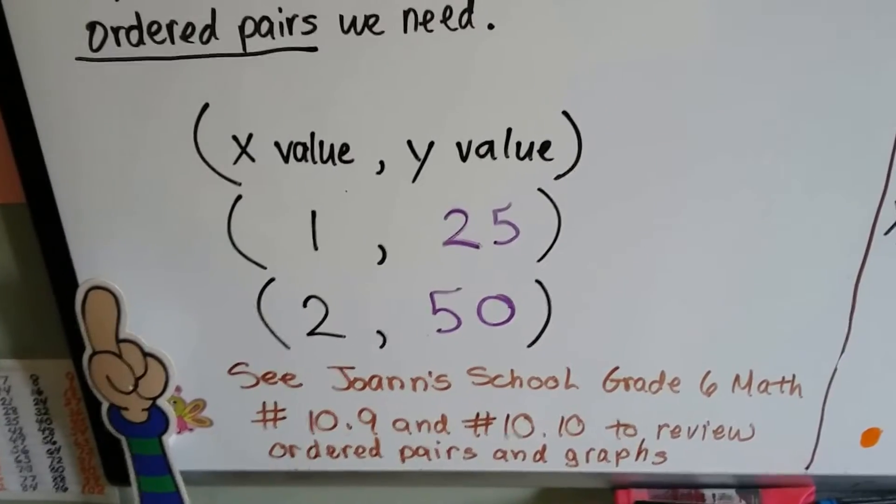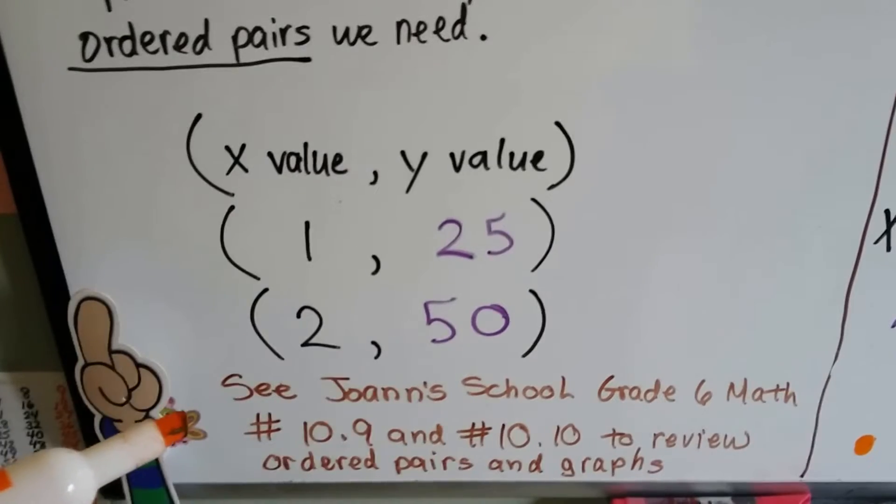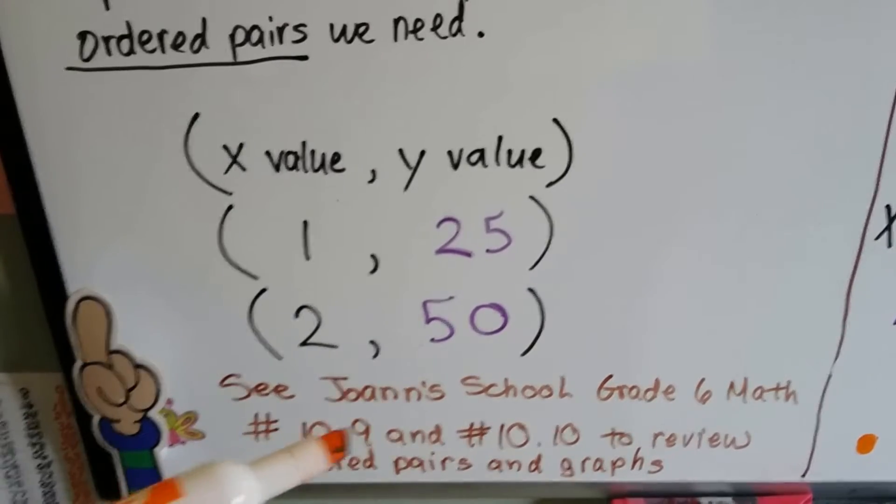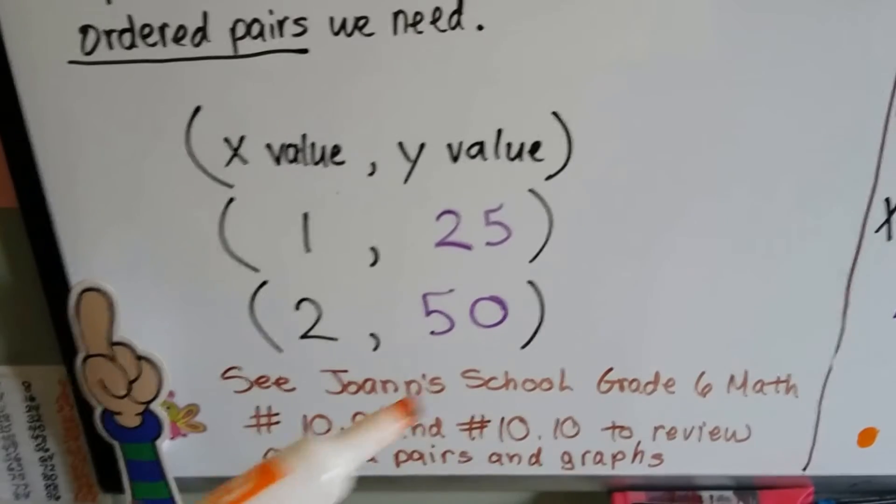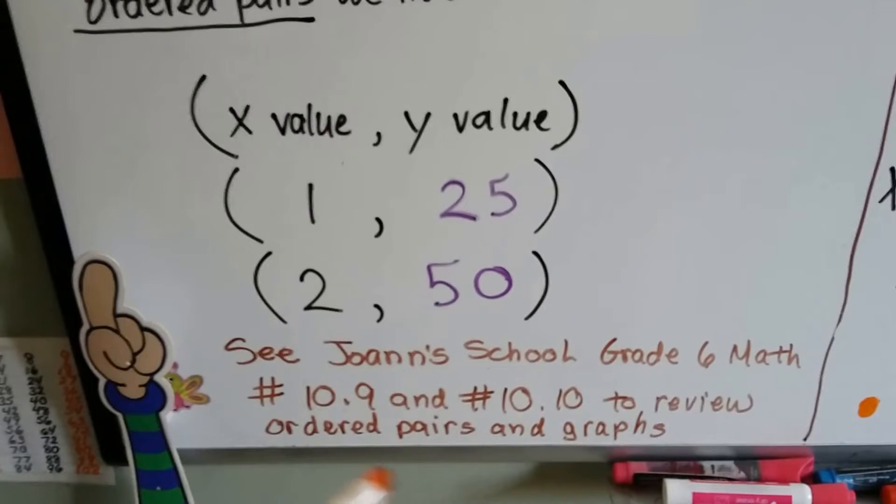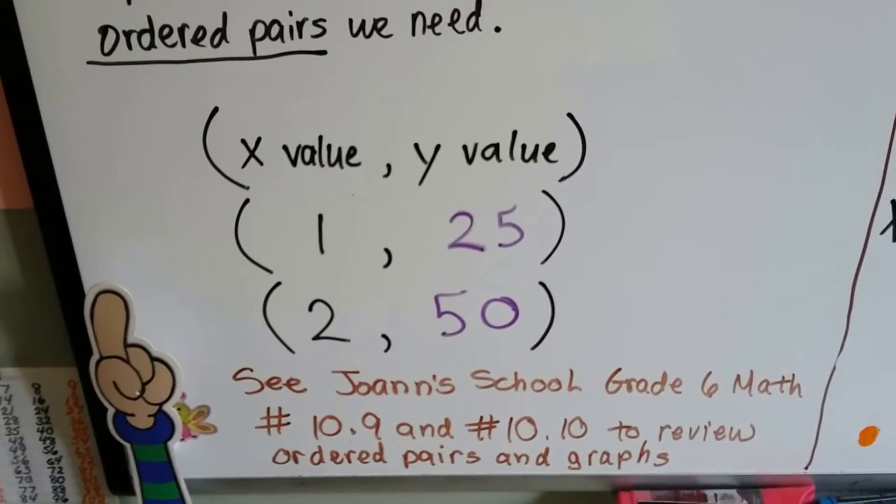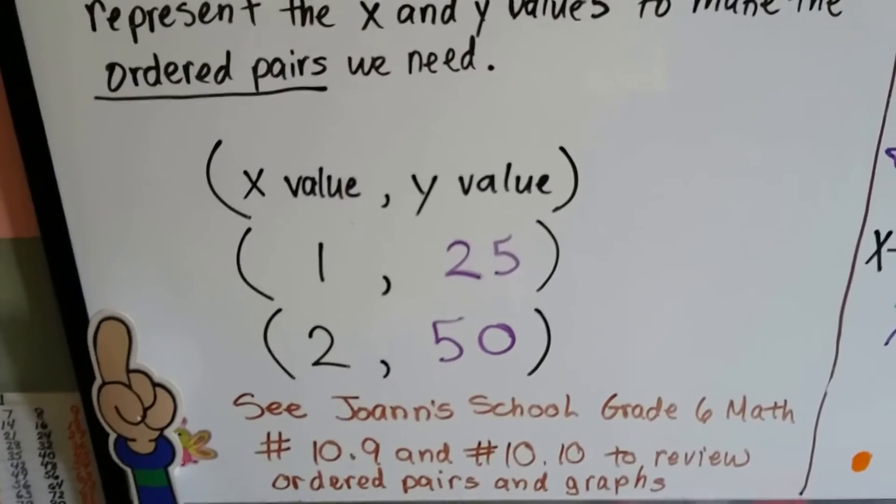Now if you're really confused about all this, you need to go back to Joanne School, Grade 6 Math. You can either go on the playlist and scan down for number 10.9 and 10.10, or you can just type in Joanne School, Grade 6, and 10.9, 10.10. And you can review the ordered pairs and the coordinate grid and the Cartesian graphs there.